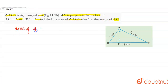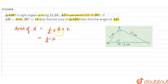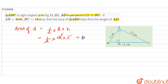Firstly, area of triangle is equal to half into base into the corresponding height. Here, the base is AC which is 12 centimeters, and the corresponding height of base AC is AB which is 5 centimeters.